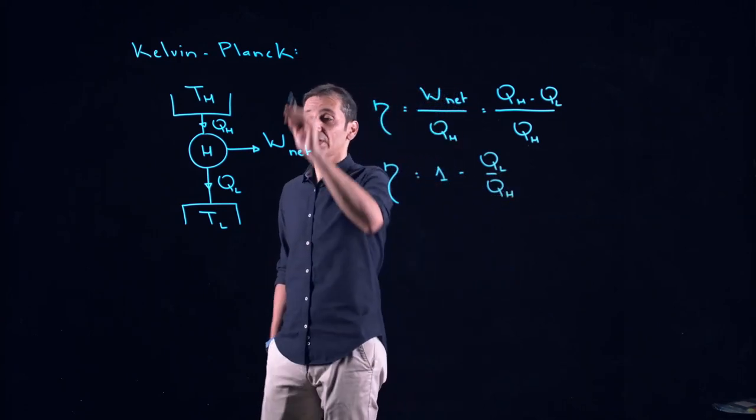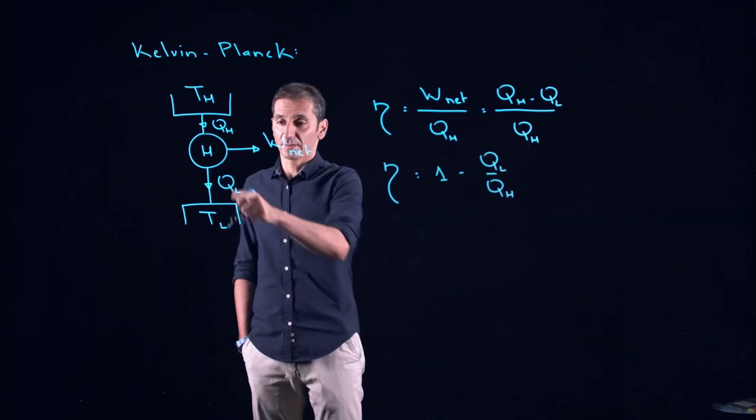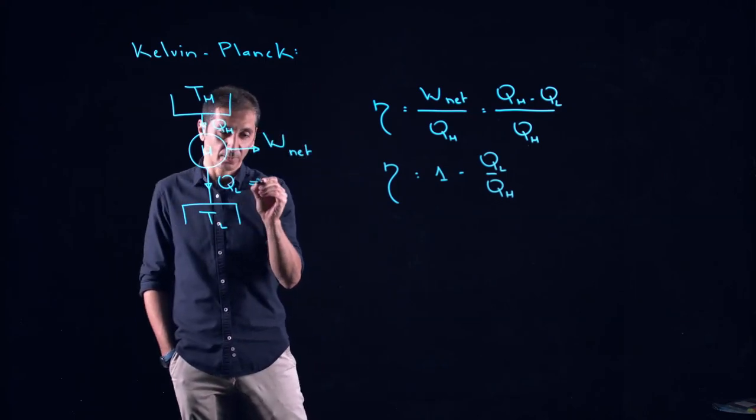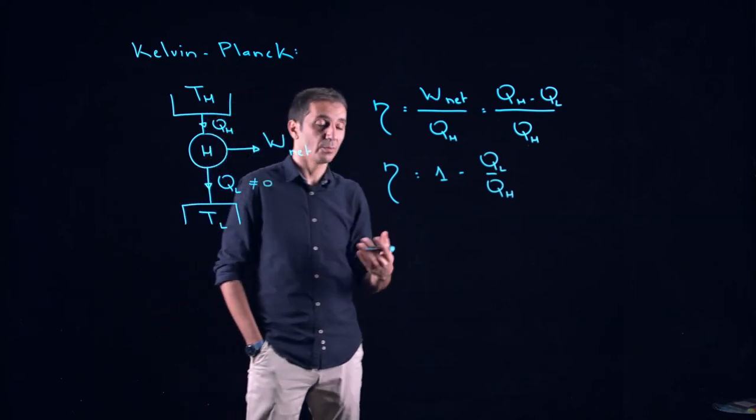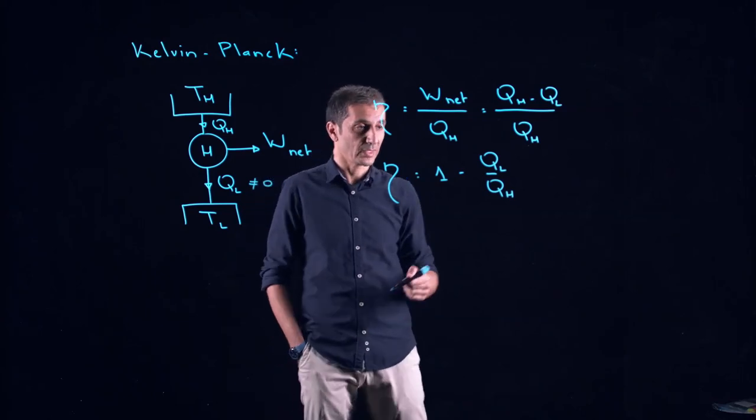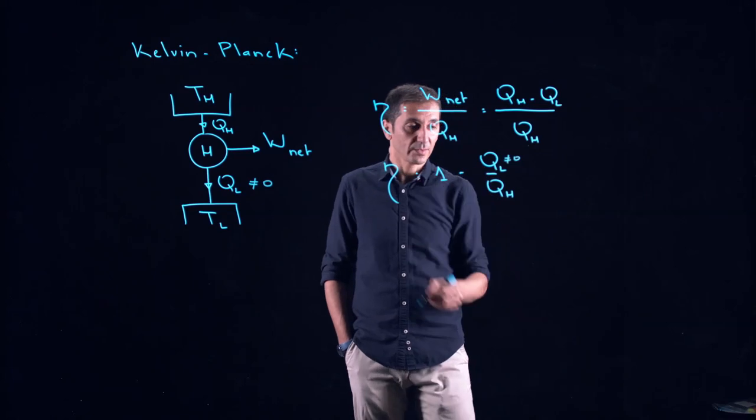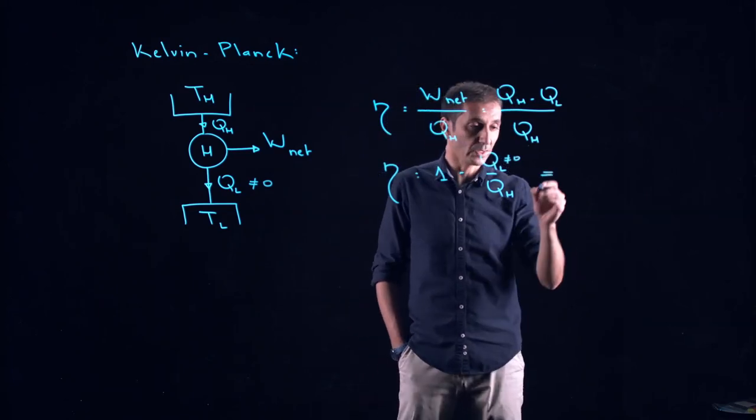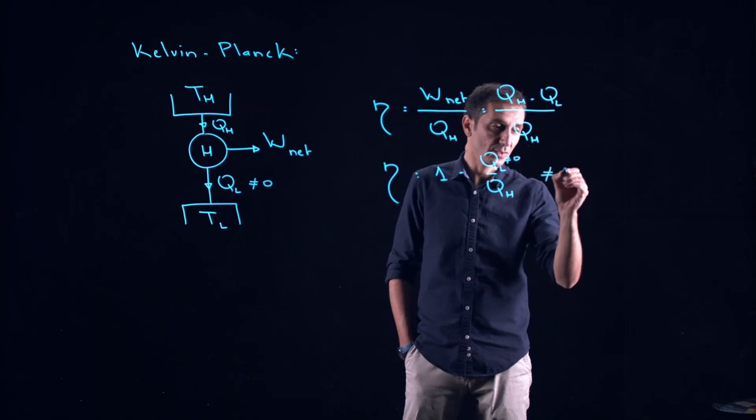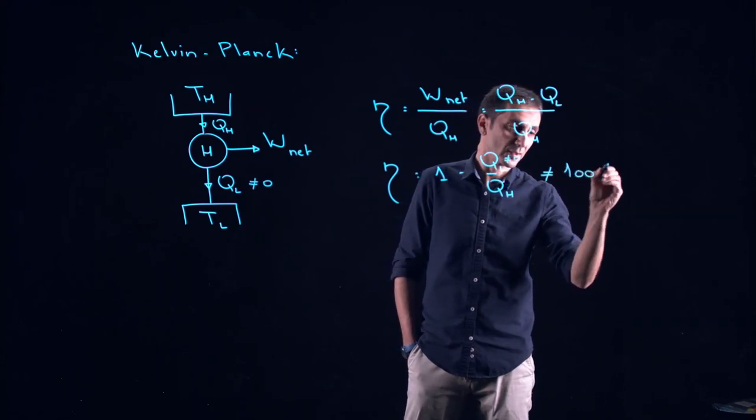Now, Kelvin-Planck statement is telling me that this one is never zero. Otherwise, I will be violating the second law of thermodynamics. Since QL is never zero, this term is never equal to 1, or the thermal efficiency is never 100%.